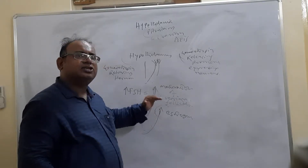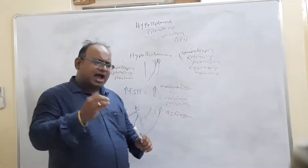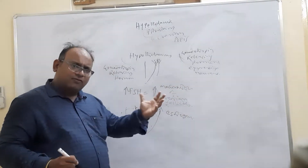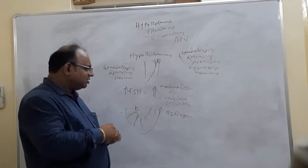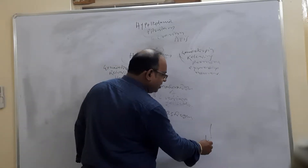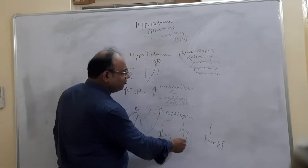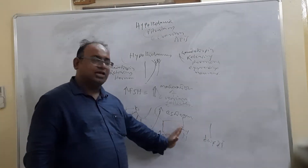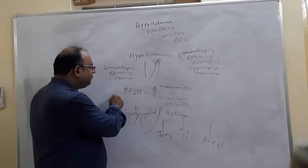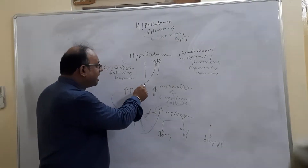When the level of estrogen gradually rises, in an ideal menstrual cycle of 28 days — with possible variations of 7 to 10 days — the middle of the cycle is day 14. When it reaches day 14, the level of estrogen is maximum. When the level of estrogen is maximum, it directly gives a positive feedback to the anterior pituitary.